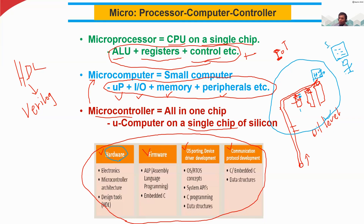In the microcontroller, we write firmware — programming about the leveling logic. On the server side, this is called the application server, and it runs on a PC with an operating system such as Windows, Linux, or Mac. We can also use RTOS — Real-Time Operating System — though that is not the focus of this course.